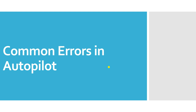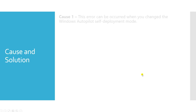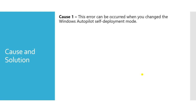Now let's look at common autopilot errors. One of the well-known errors users get when doing autopilot is error code 0x80180014. You can see this type of screen and error. Let's see how you can resolve it — the cause and the solution for why this error occurred.